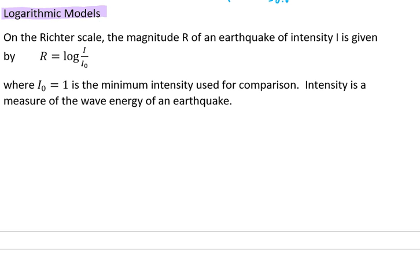On the Richter scale, the magnitude R of an earthquake of intensity I is given by R equals the log of I over I₀, where I₀ equals 1 is the minimum intensity used for comparison. Intensity is a measure of the wave energy of an earthquake.